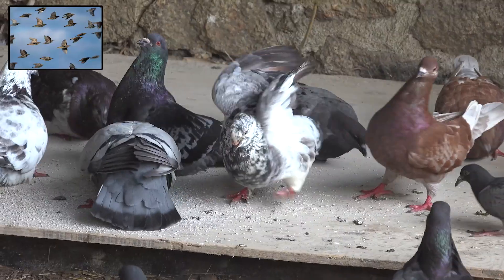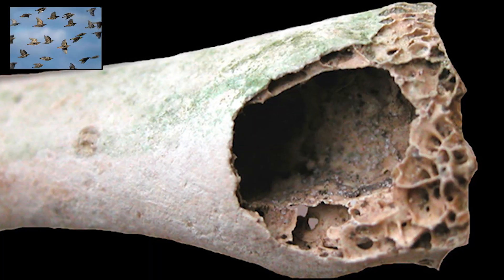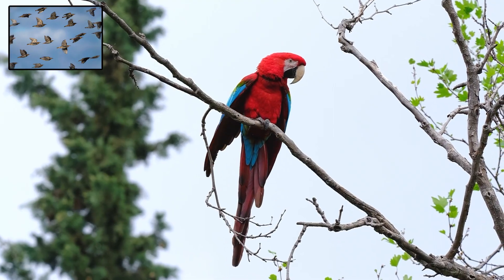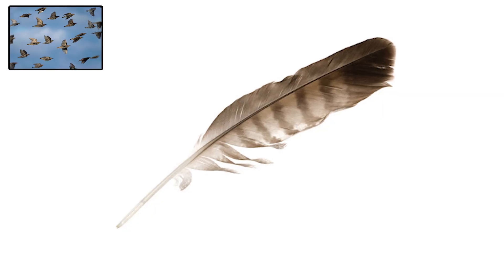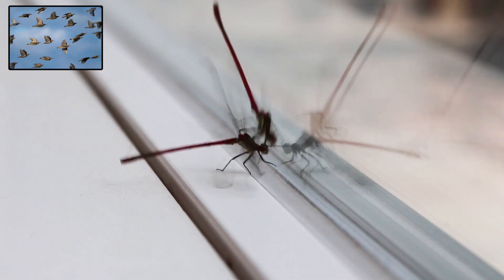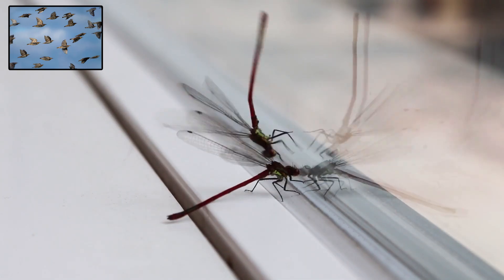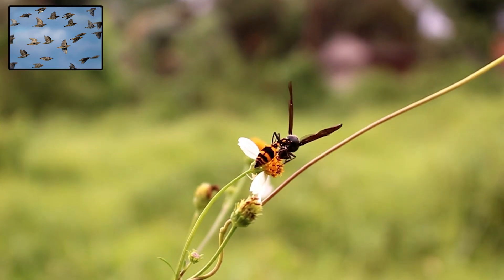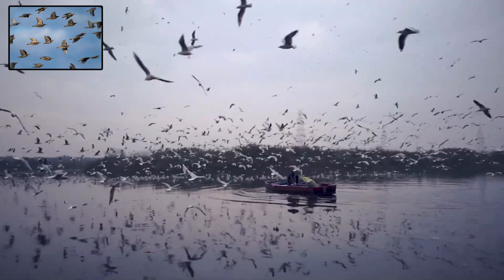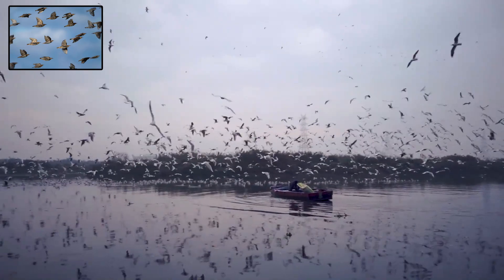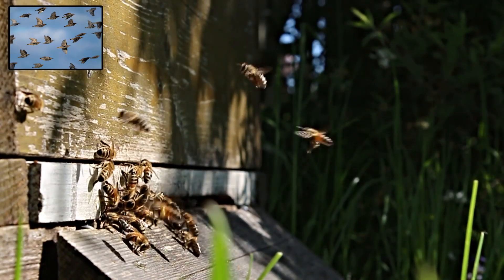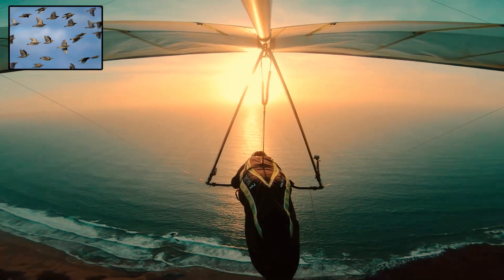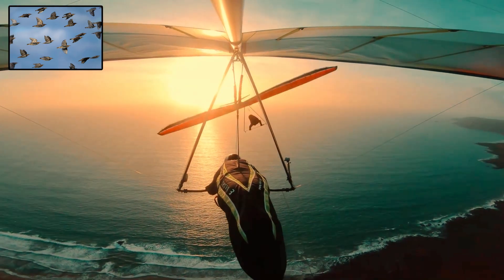This ability also led to the evolution of specialized body features: hollow bones for reduced weight, strong chest muscles for wing movement, and keen senses for navigation. Feathers became essential tools for controlling flight. Insects developed complex wing patterns and behaviors that helped them communicate, evade predators, or blend into their surroundings. Flight isn't just a physical adaptation — it changed how species interact with the world. Pollinating insects like bees help plants reproduce. Birds spread seeds and shape ecosystems. Flying animals have even inspired human inventions.